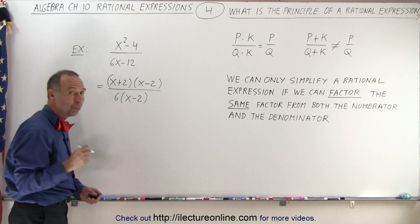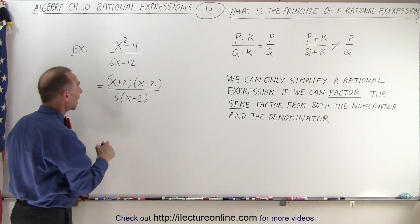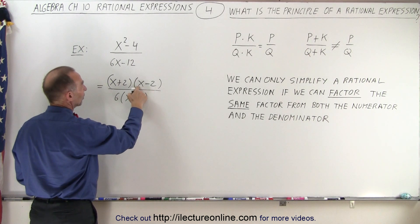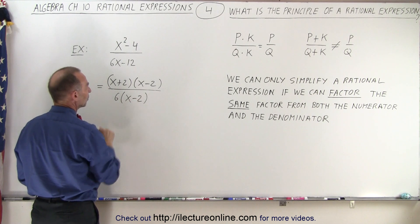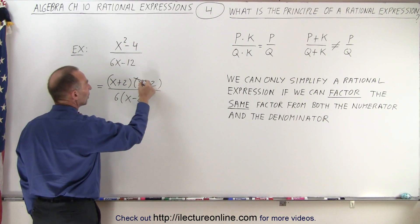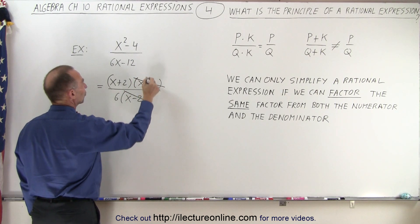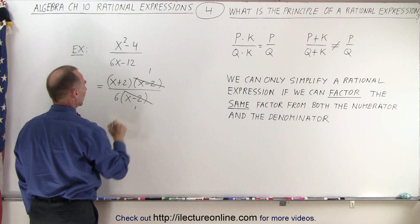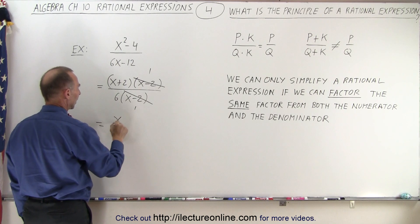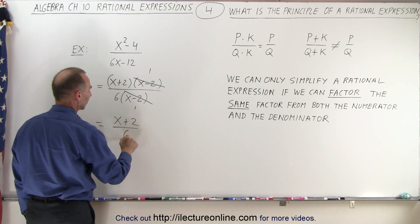Now notice both the numerator and denominator have a common factor: x minus 2. We can simplify by dividing both by x minus 2, which this becomes 1, this becomes 1, and we're left with (x plus 2) divided by 6.